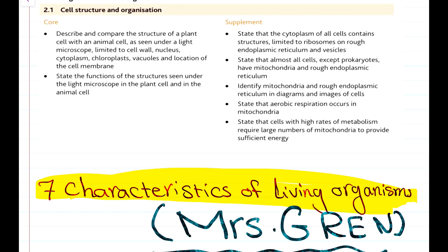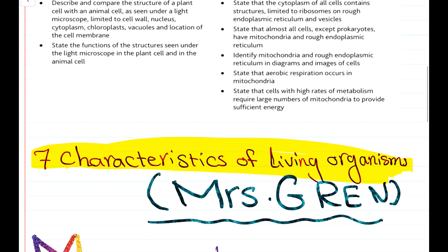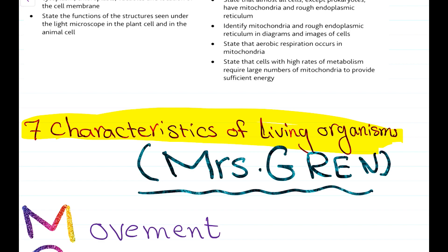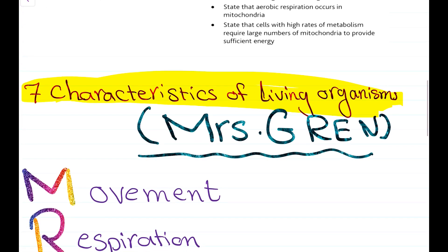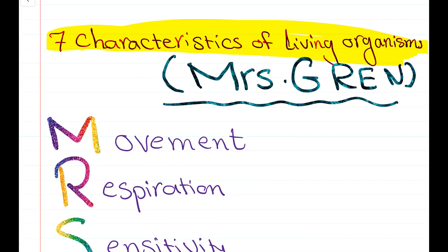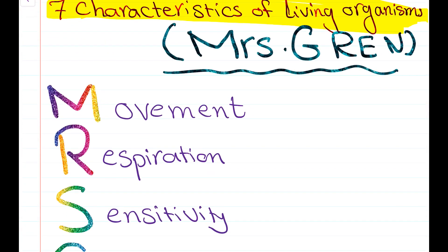The first point: the characteristics of living organisms. We have seven characteristics, which can be abbreviated to MRS GREN. The first one is movement. What is the definition of movement? Movement is an action by an organism or part of an organism causing a change of position or place. So the organism can move — it means it can change its position or place.